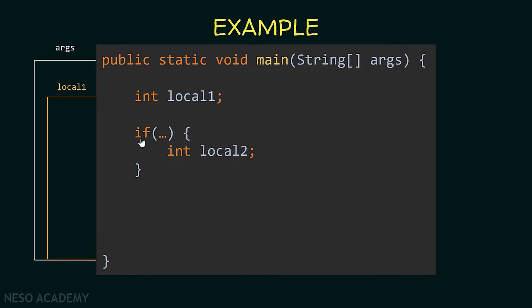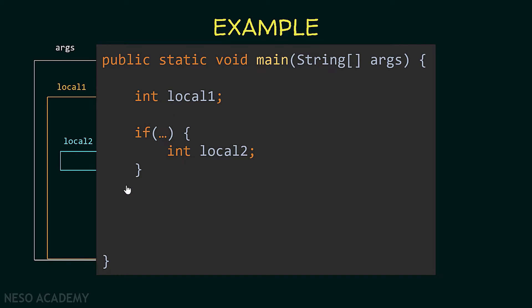Now suppose that we have an if statement with some braces, so the if statement has its own block. What if we declare a variable inside the if statement? The scope of this variable starts from its declaration until the end of the block that contains the variable. So it starts here and ends at the closing brace of the if block — that is the end of local2's scope. This variable can only be used within that range; we cannot use it outside the if statement, above it or below it.